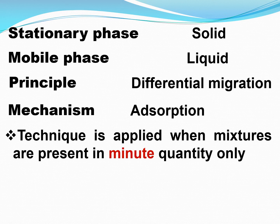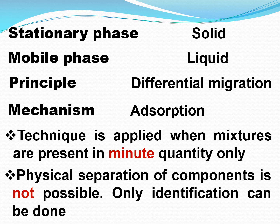The mechanism in TLC is adsorption because the stationary phase is a solid. This technique is applied when mixtures are present in minute quantities only. Suppose you have only 1 ml of a mixture — you can use TLC to find out what the components are. However, physical separation of the components is not possible; you can only identify what the components are, but you cannot collect them separately.